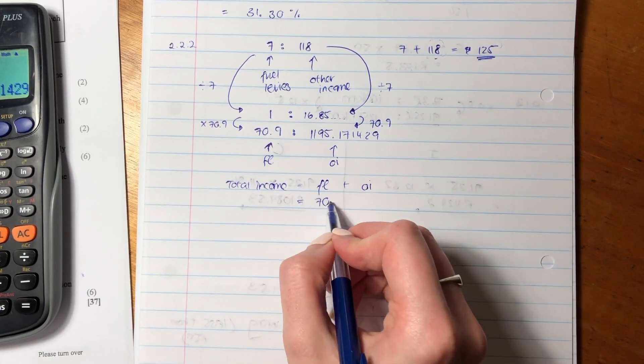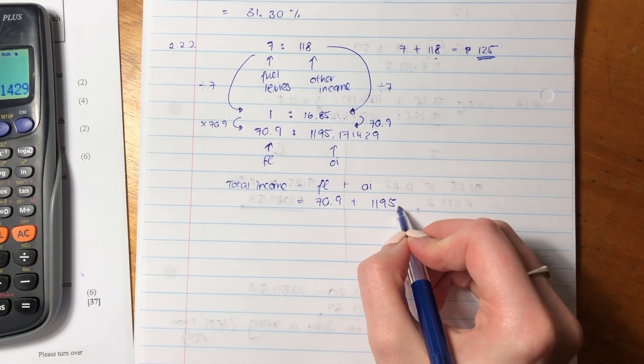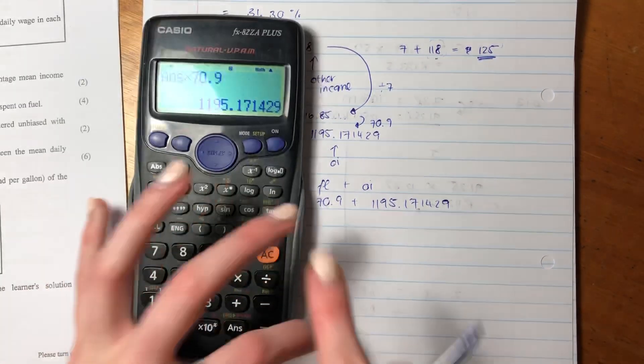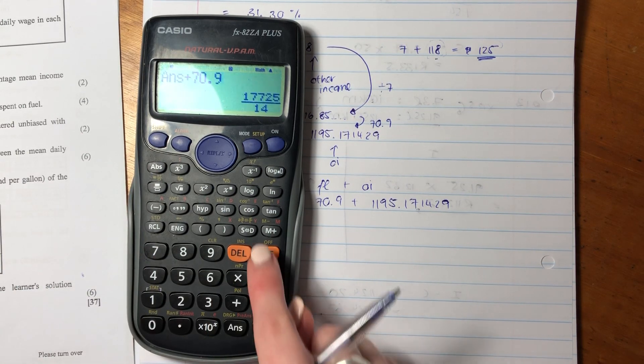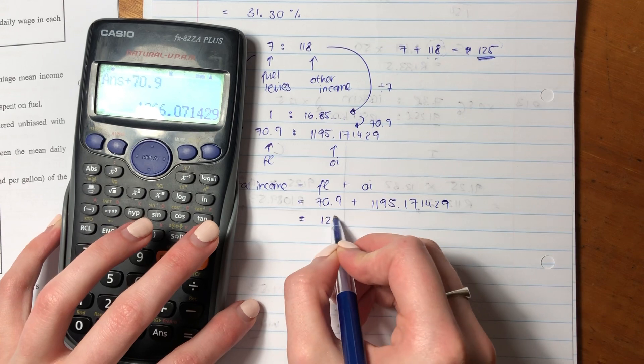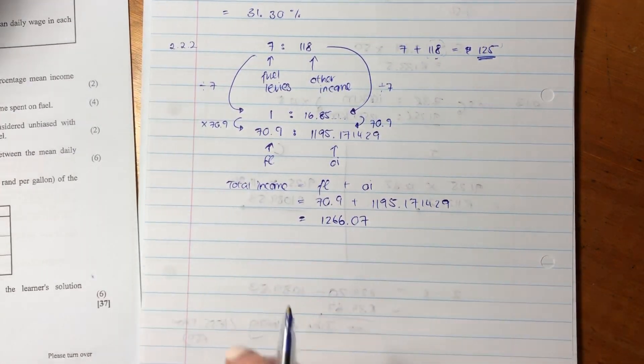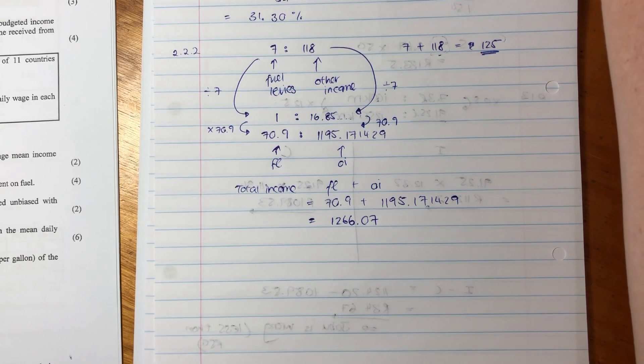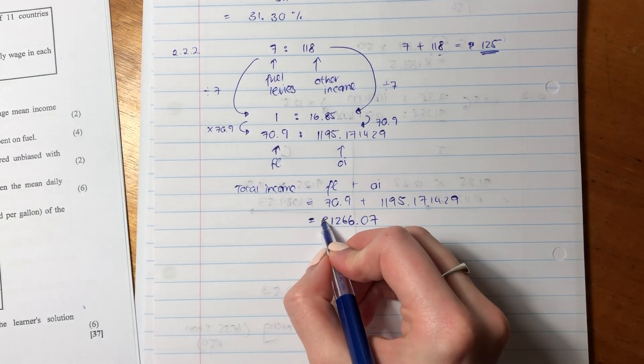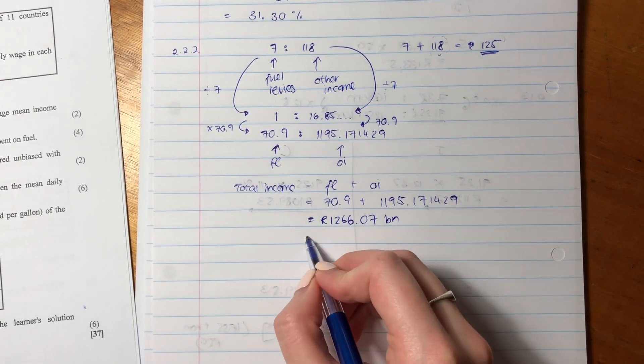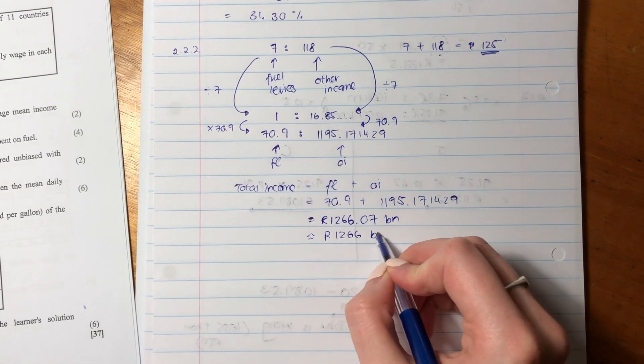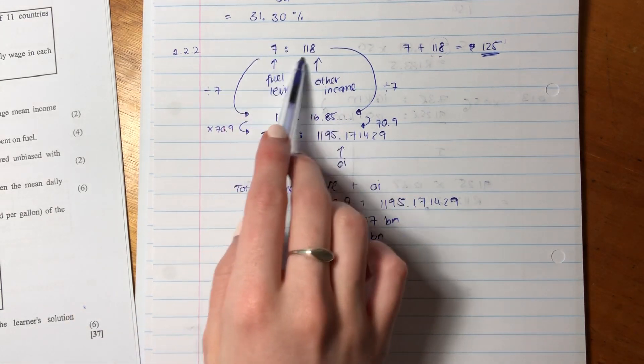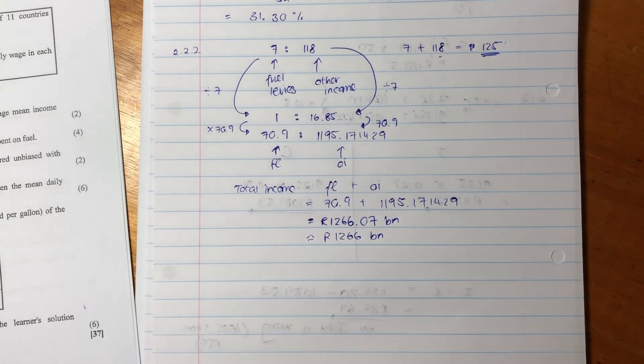So we take this amount that we have in our calculator, times it by 70.9, and that gives us 1195.171429. So what we know is this is the fuel levy, and this here is the other income. So in order to get the total income, we say the fuel levy plus other income, which is 70.9, plus 1195.171429, remembering that both of these are in billions. Take this amount in your calculator, plus 70.9, gives us 1266.07. Now, what did the question ask us? It asked us to the nearest billion rand. So it would be 1266 billion.